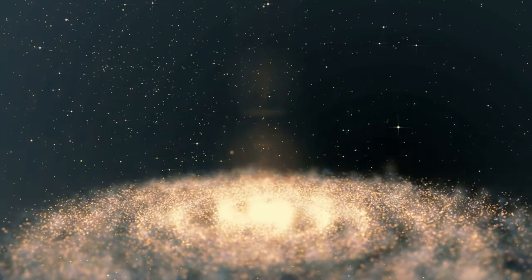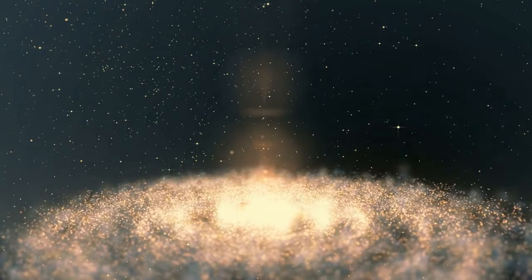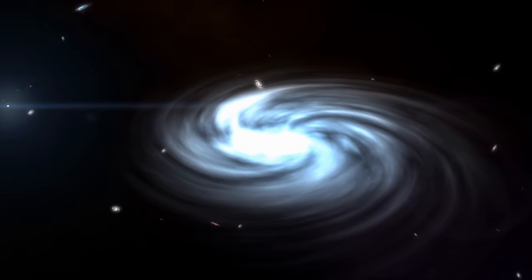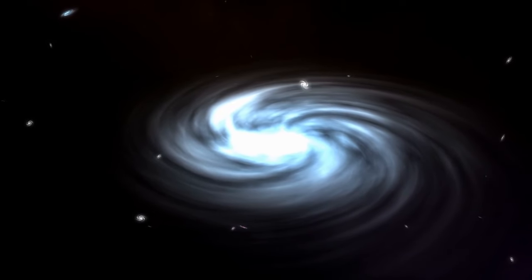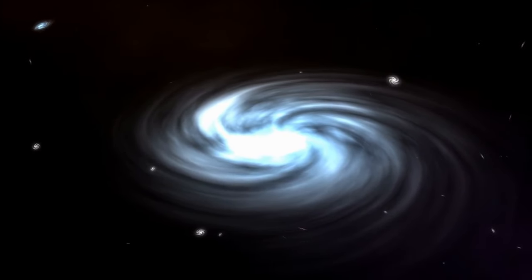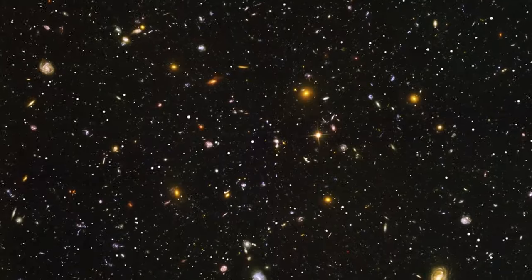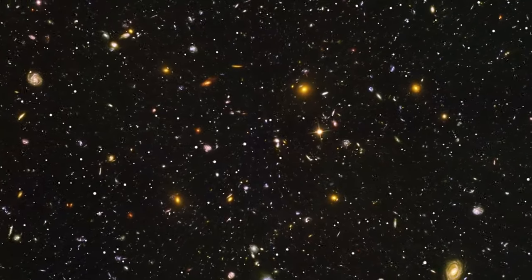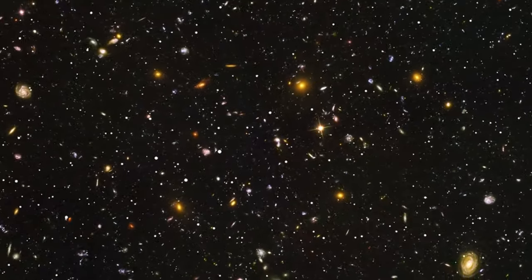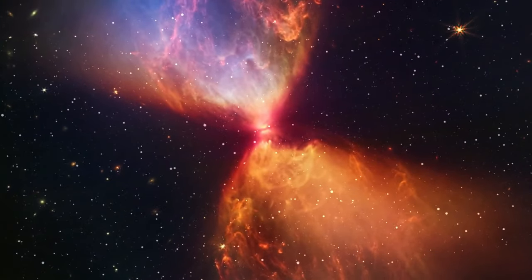Continuing our exploration, the third largest galaxy, UGC 9555, commands attention within the UGC 9555 galaxy triplet system. Its vast dimensions contribute to its ranking as the third largest galaxy in the observable universe. This cosmic giant adds to the diversity of galactic structures, further enriching our understanding of the expansive celestial realm.